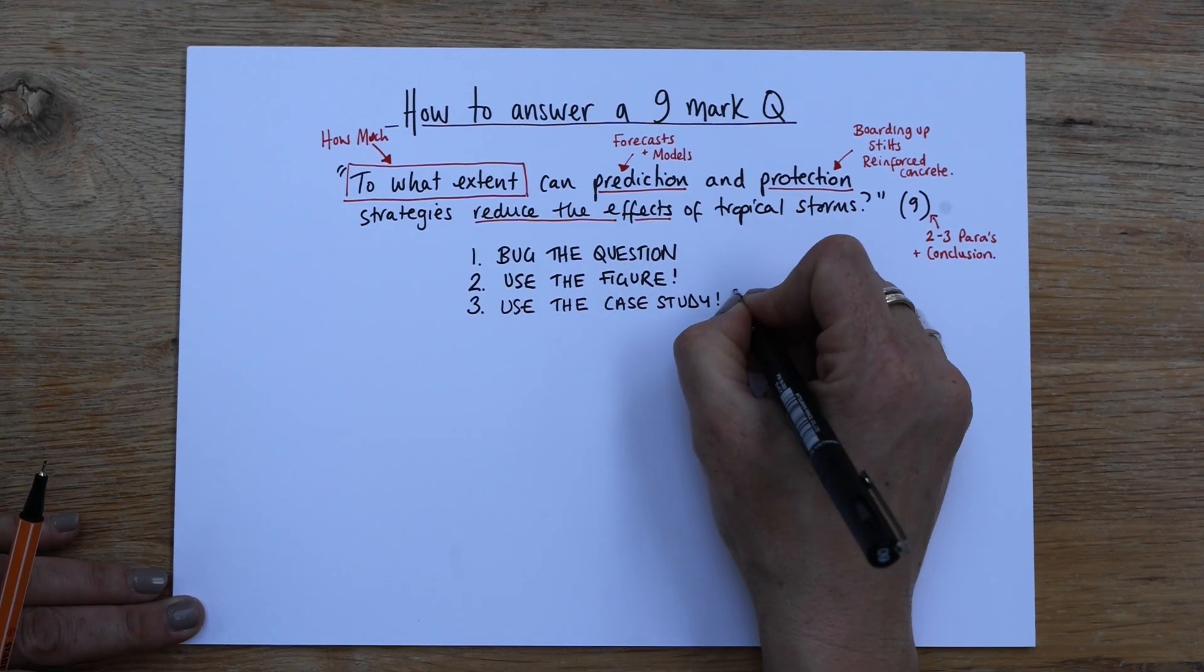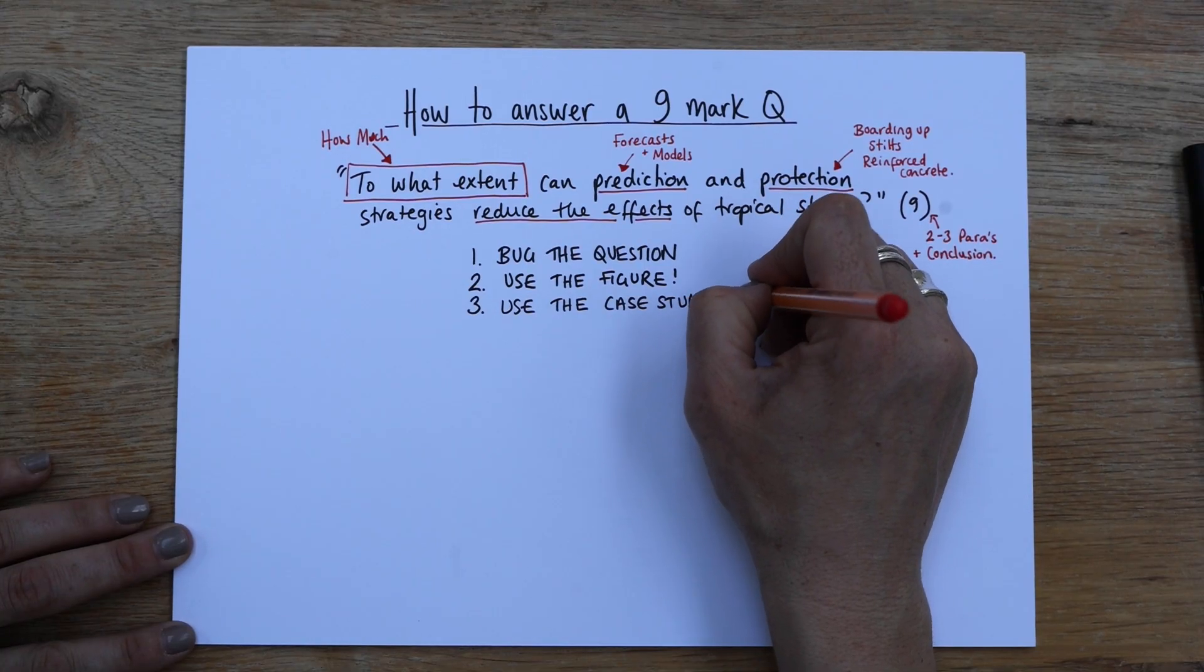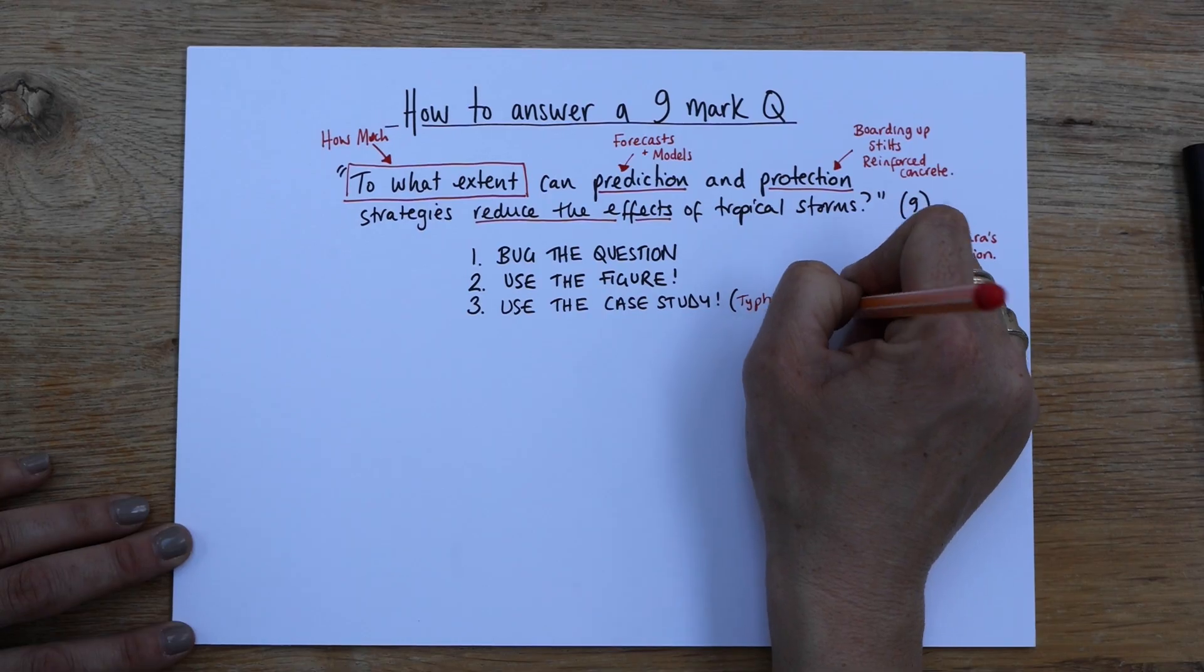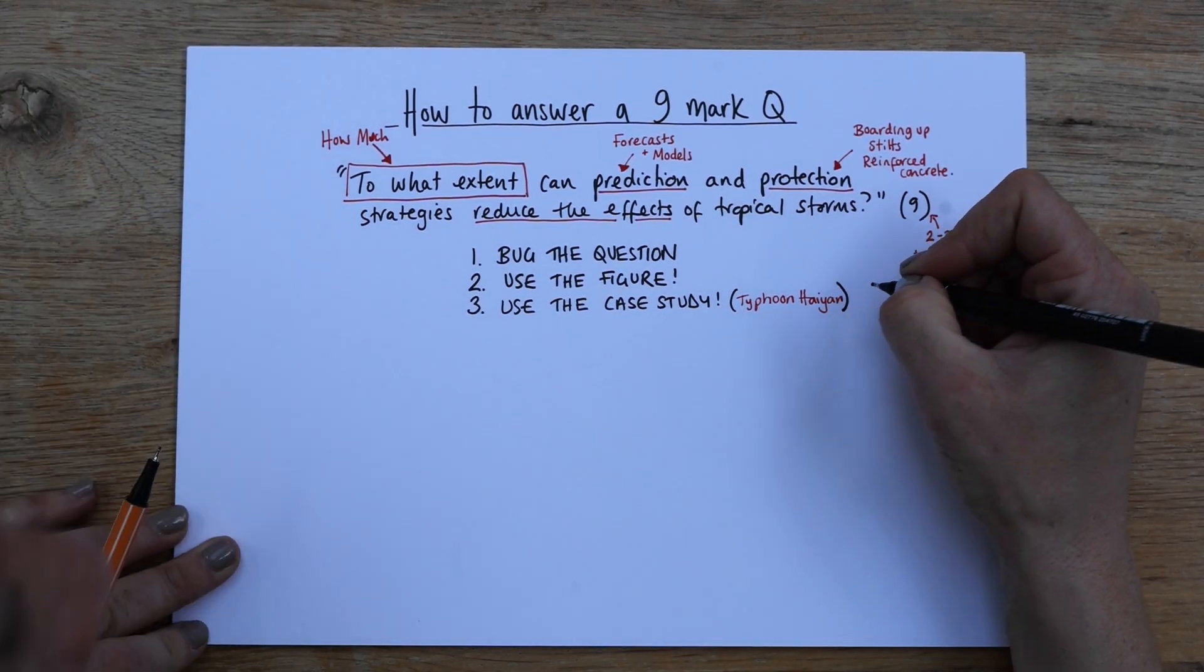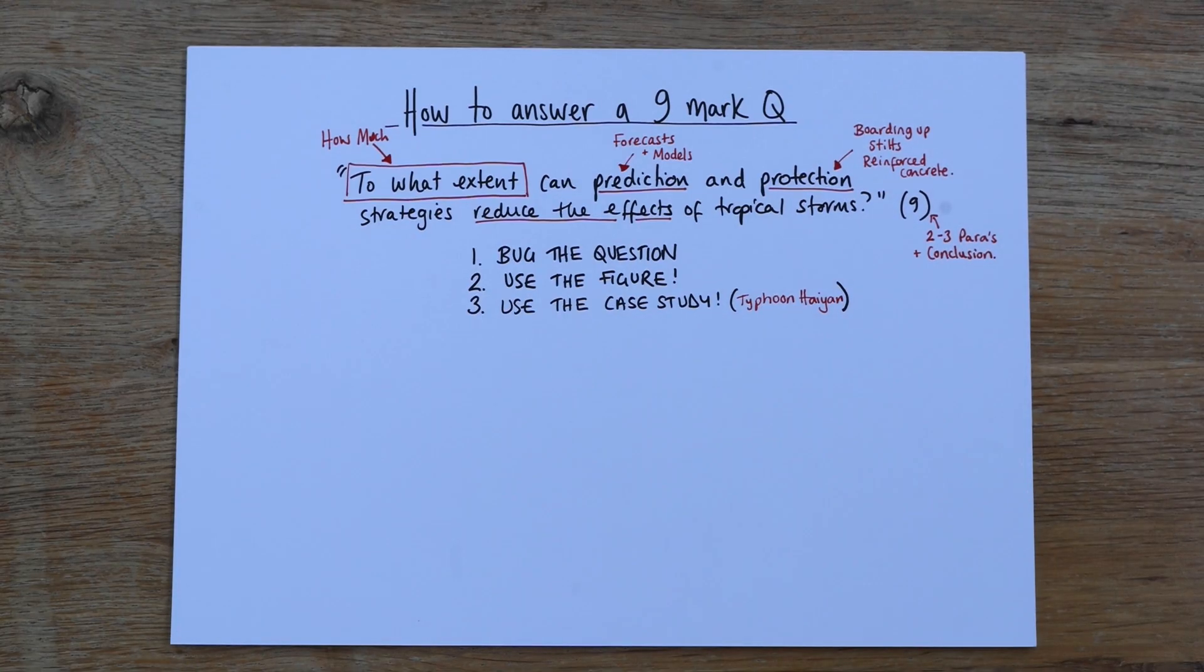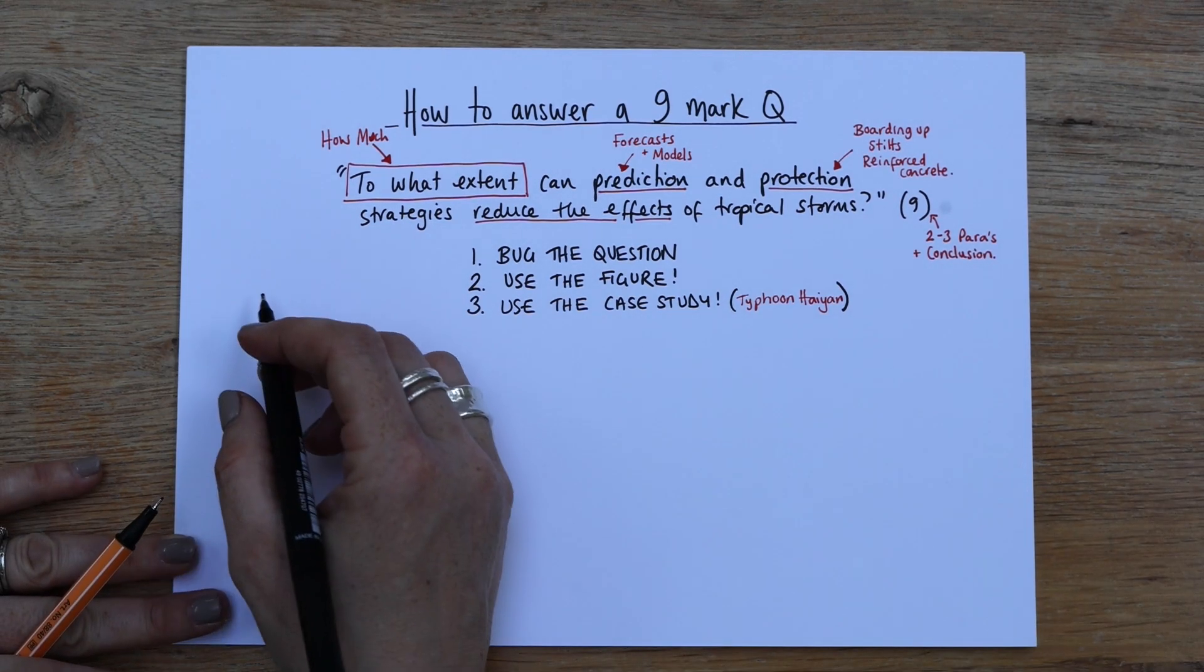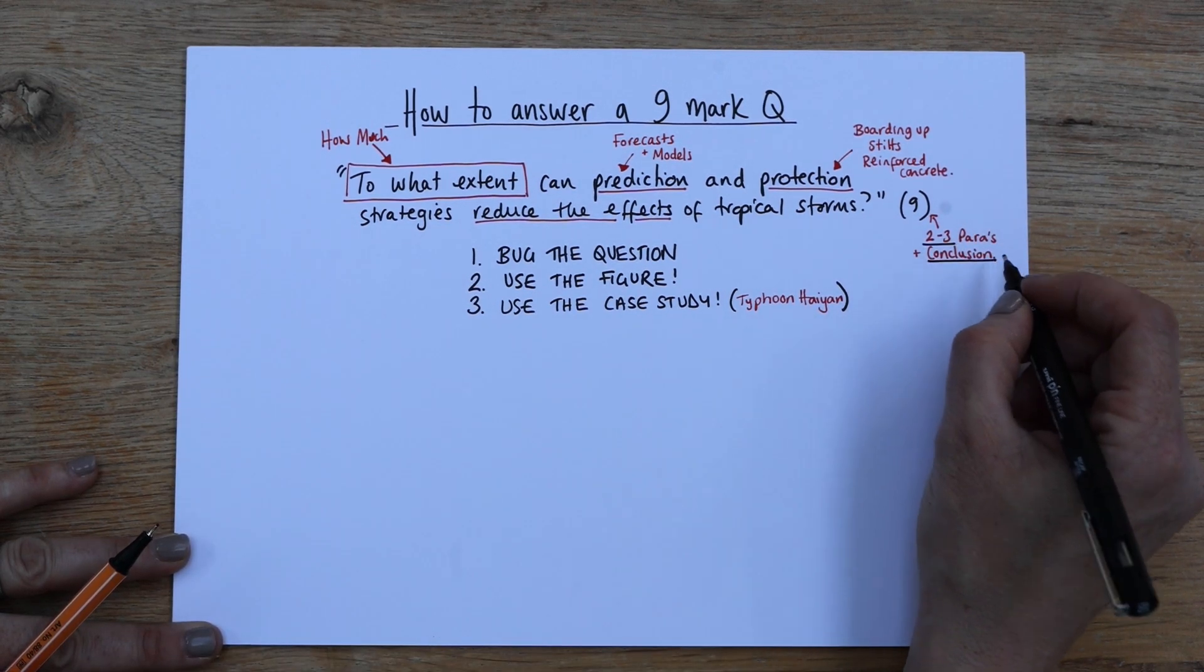So for this one, it's going to be Typhoon Haiyan. And I've seen my students in mock exams write that down around the outside of the question. I love it when I see that level of planning. It doesn't take long, literally take seconds. But it's such a game changer with the results.